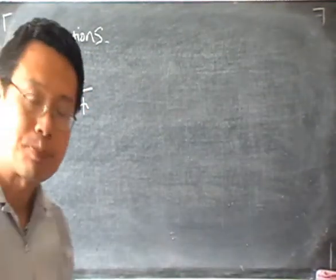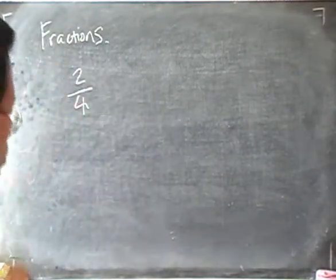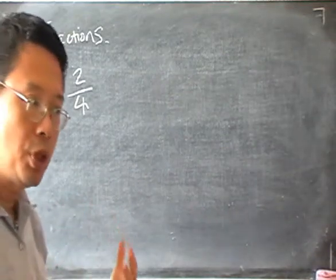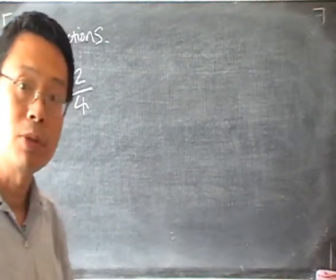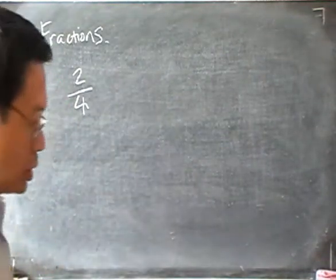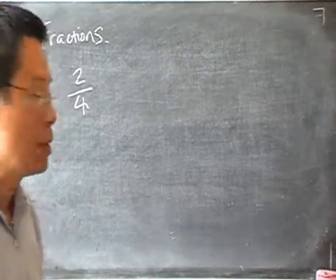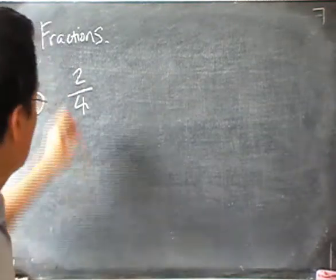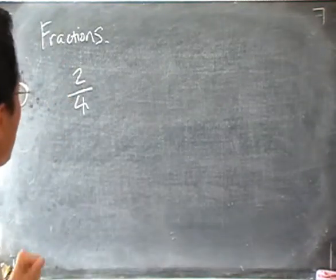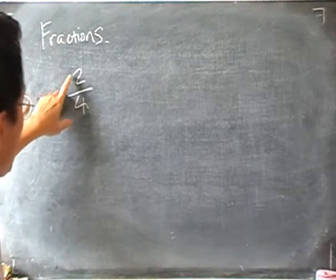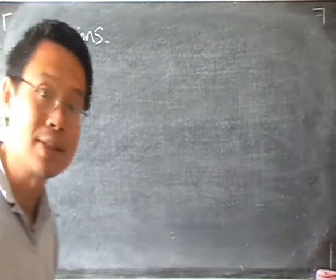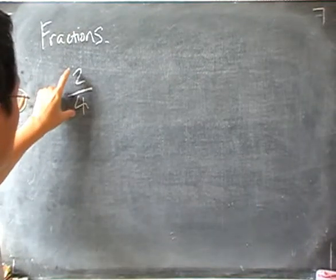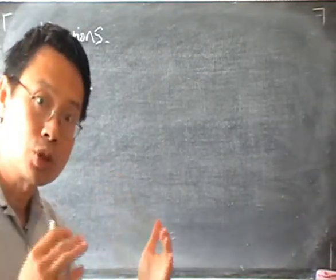Let's start with this example. If I have a fraction 2 over 4, we can change it to a simpler form or a lower term. If we look at the top and bottom of the fraction — the numerator and the denominator — and if we can see that there are common factors,